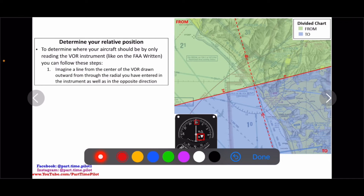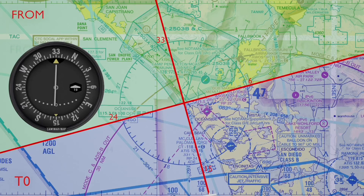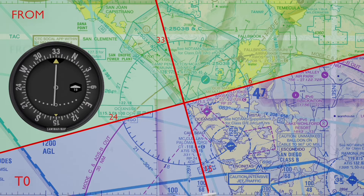Let's see the course deviation needle in action in another animation. Our aircraft is pointed in the 330 direction with 330 dialed in, but we're on the opposite side of the 330 radial, so we have a TO indication. Our needle is centered because we're on that line. Watch the needle as we veer off to the right and left. Because we're pointed in the same direction as what we have dialed in, we have normal sensing: needle to the right means turn right, needle to the left means turn left.